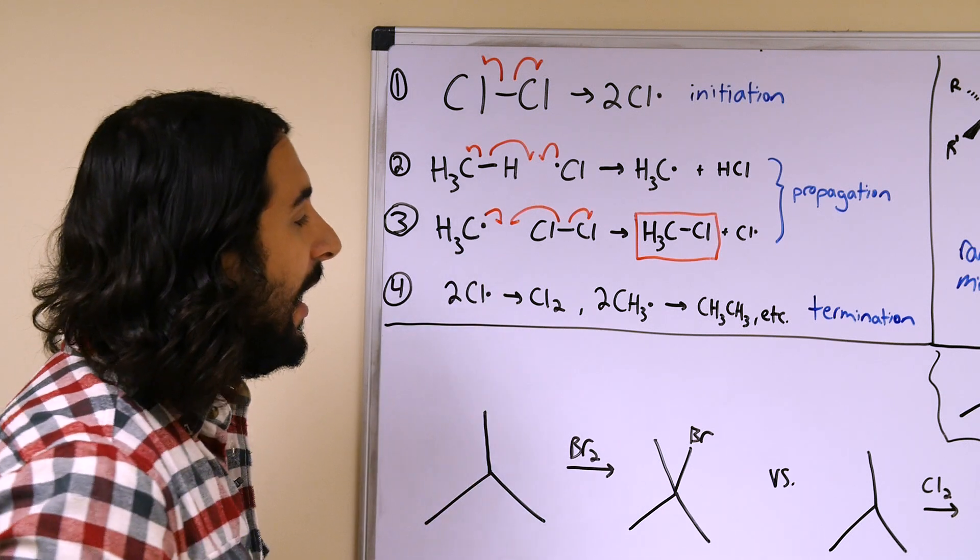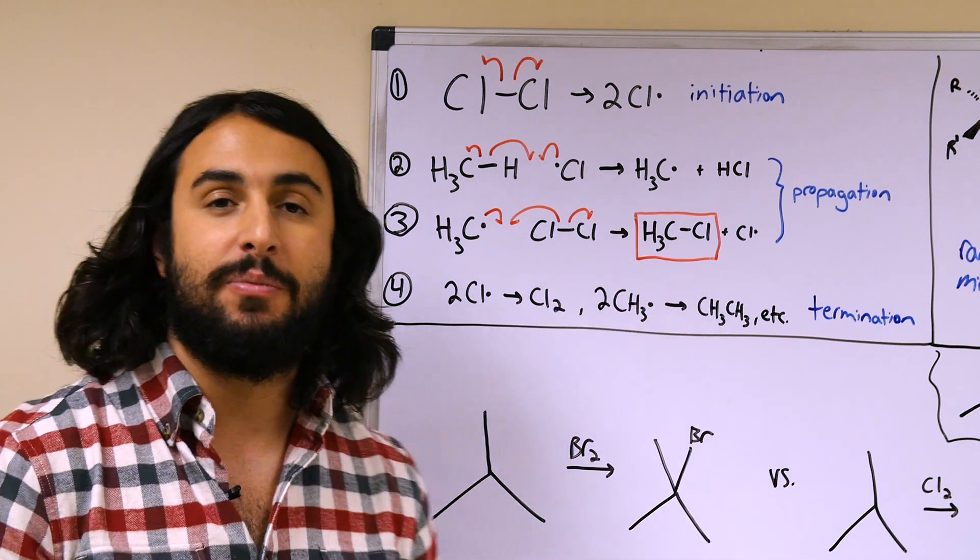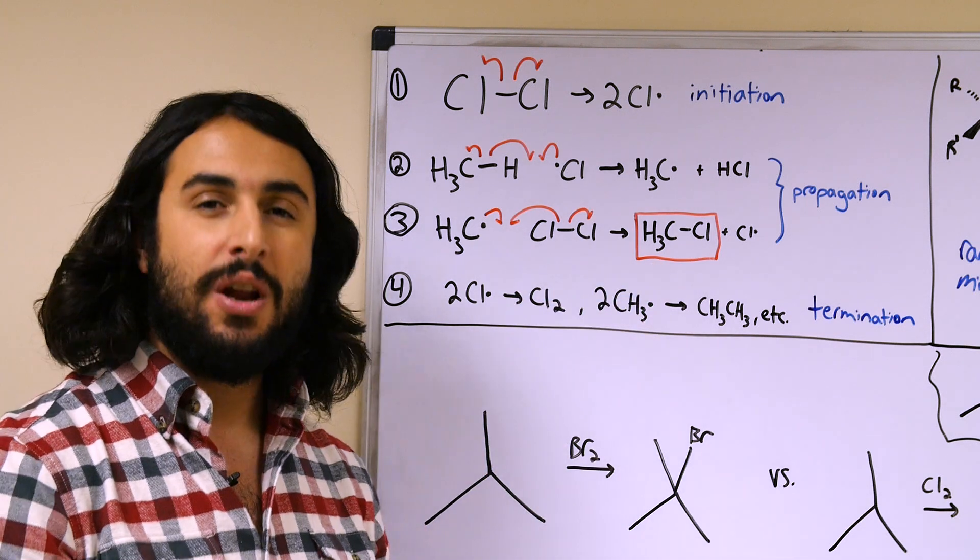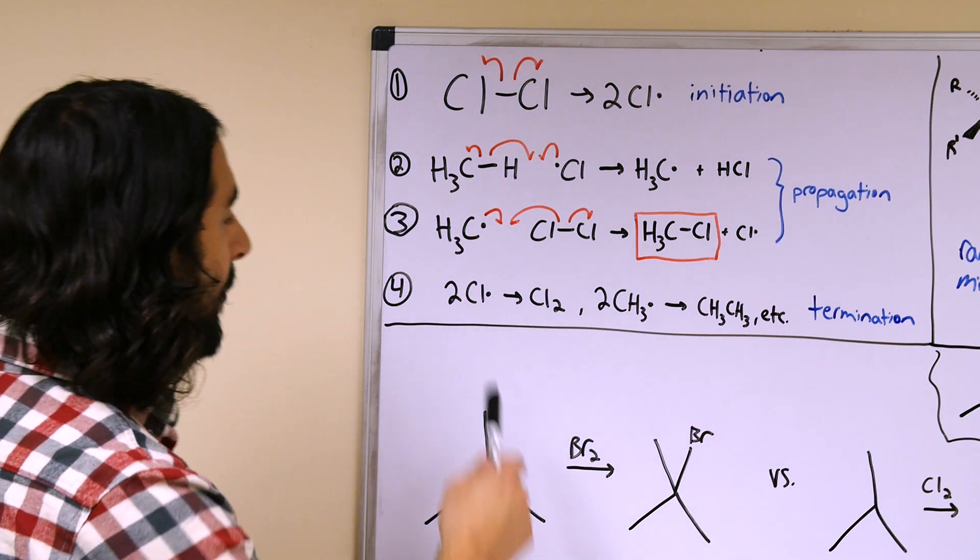It is just as well that a carbon radical could have found a chlorine radical, and then the chloromethane could have been generated in the termination step. There's a lot of ways for this to go, but in this case we drew it as a propagation step.